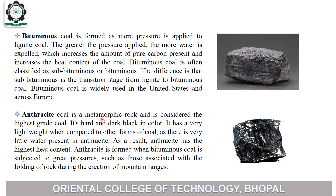Anthracite coal is a metamorphic rock and is considered the highest grade coal. It is hard and dark brown in color. It has a very low water content compared to other forms of coal, and as a result, anthracite has the highest heat content. Anthracite is formed when bituminous coal is subjected to great pressures, such as those associated with the folding of rocks during the creation of mountain regions. Anthracite is the highest grade coal. This is the diagram of anthracite.